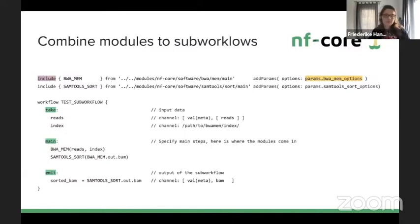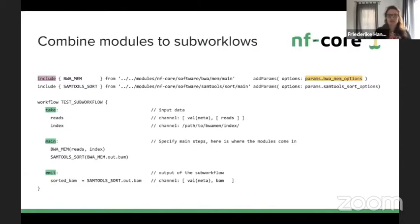In the main scope, this is where modules come to work. We have the BWA module and the SAMtools sort module, and we can run BWA then take its output and directly pipe it into SAMtools sort. From the subworkflow we can emit named outputs — for example, naming the SAMtools sort output as sorted_bam — and then up in the workflow we can access this sorted BAM directly to do further steps with it.